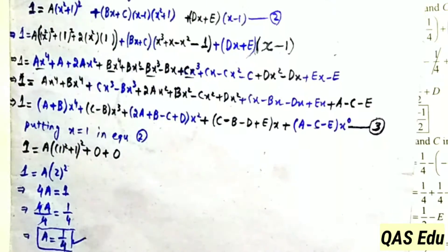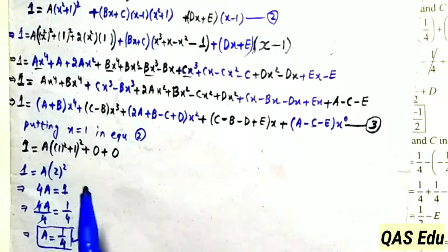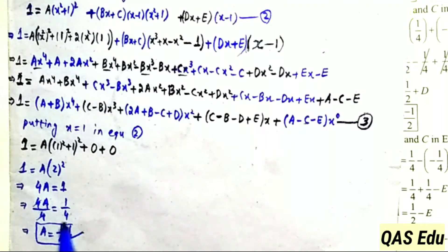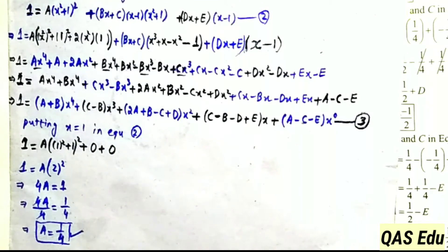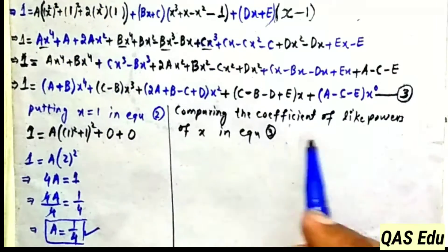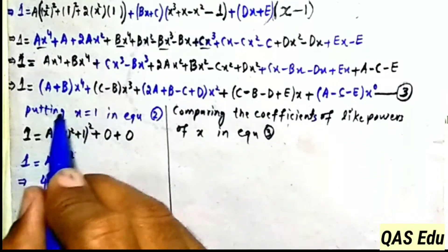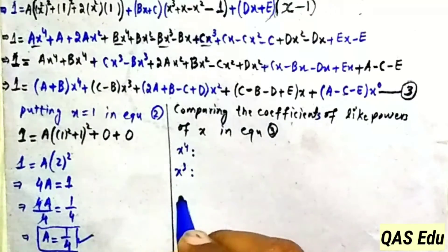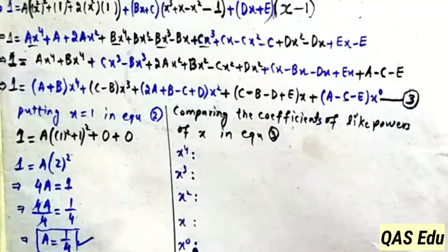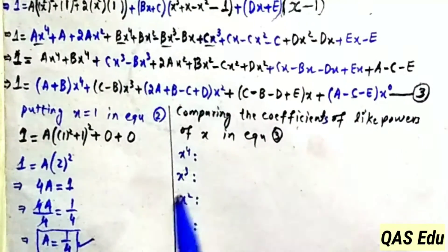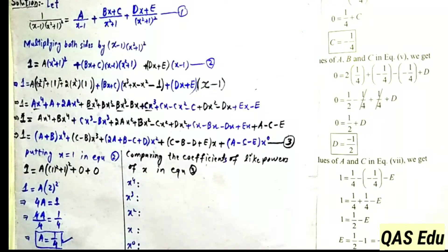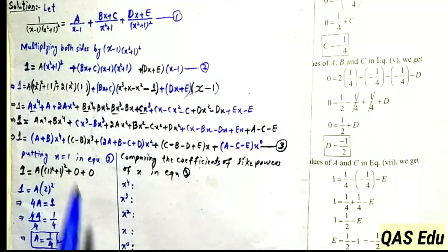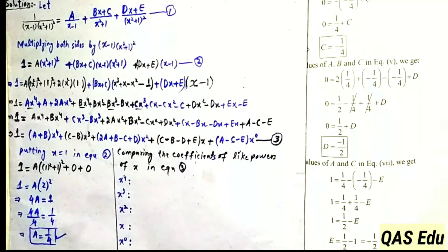Now to find the remaining constants, we use equation number 3 by comparing coefficients of like powers of x. Using A's value, we can find B, then C, then D, and then E from the equations. The number of terms and constants a, b, c, d, e will be determined this way.